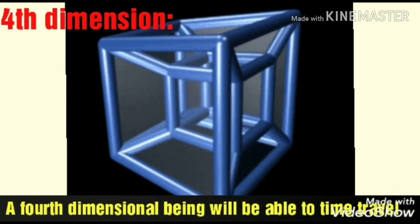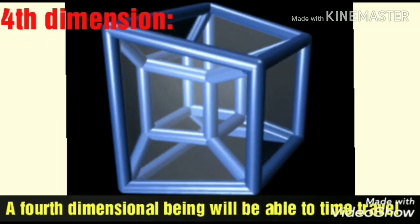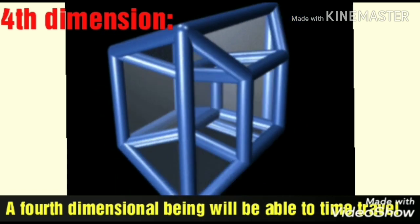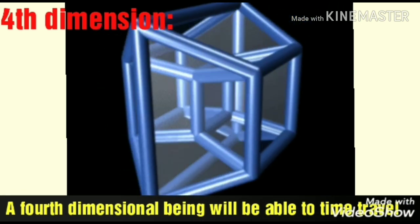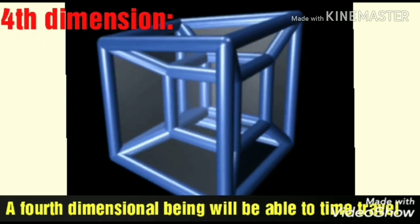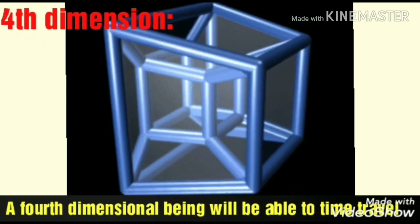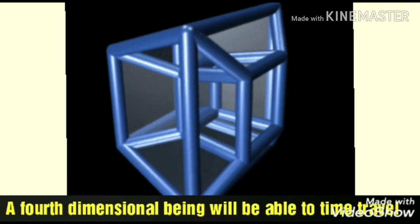A fourth dimensional being will be able to time travel and age anything at will. He will be able to observe all of time from the big bang to now all in one go. A fourth dimensional cube is known as a tesseract.